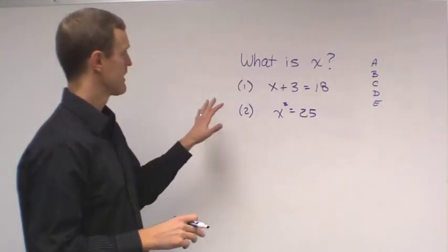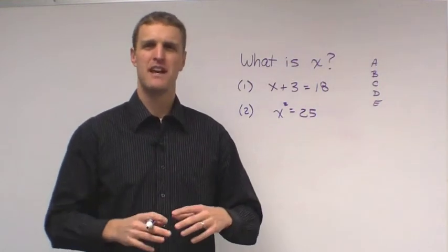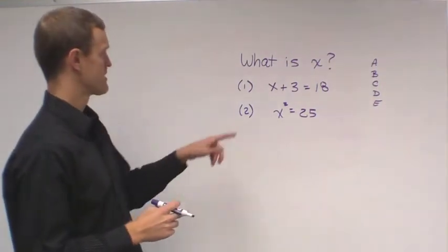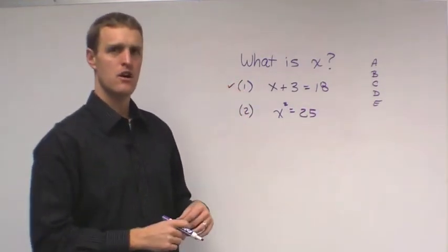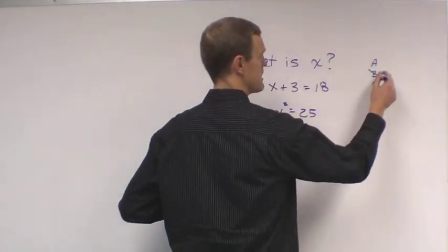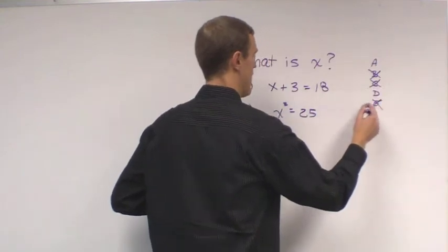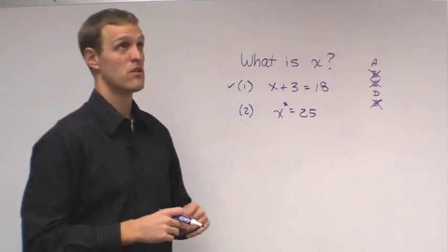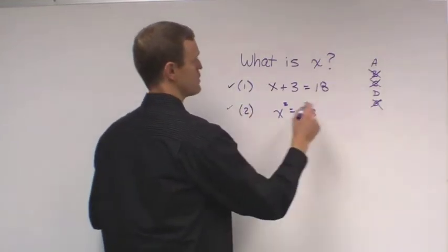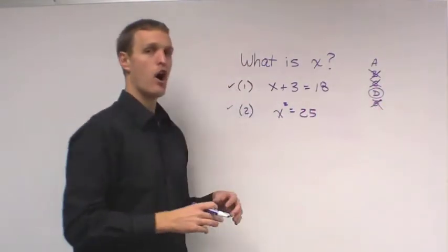In a question like this, a lot of students will look at it and they definitely don't take a minute 45. They say, what is x? That's an equation. Yep, that's sufficient. And so once I know that's sufficient, I get rid of b, c, and e. And then they look at statement two, x squared equals 25. Yep, one variable, that's just the square root of 25 is 5. Yep, that's sufficient. And you circle it and off you go.